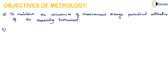Another objective is to maintain accuracies of measurement through periodic calibration of the measuring instruments. If instruments are not calibrated periodically, they will not give accurate results. Metrology's objective is to calibrate these instruments to obtain accurate measurements.